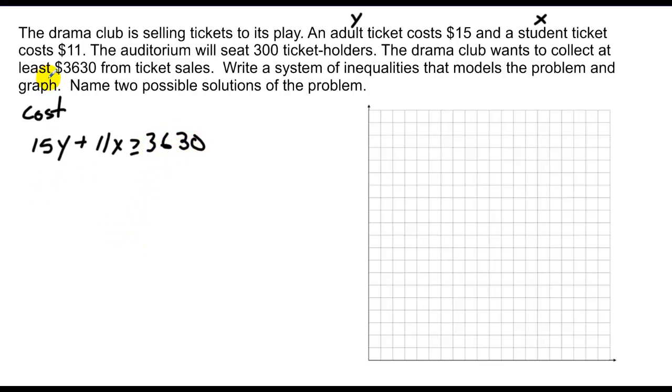Next, I want to take and sell 300 tickets, but I can't sell any more than that because the auditorium only seats 300. So I have to have less than or equal to 300. And that's the total number of people, so that's all the adults y and all the students x.